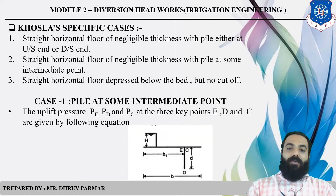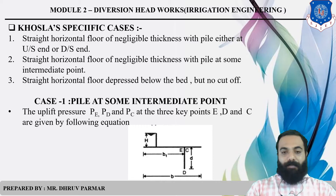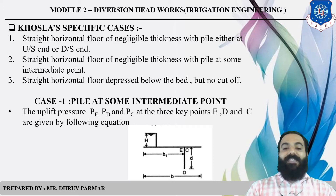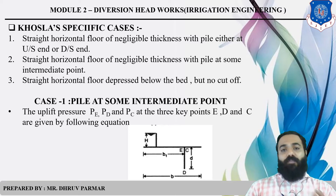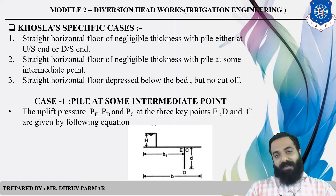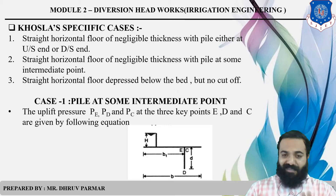Here b means baseline. b₁ is the distance from the upstream point to E. For example, if the total base b = 50 and b₁ = 30, then b₂ = 50 − 30 = 20. Remember this concept.